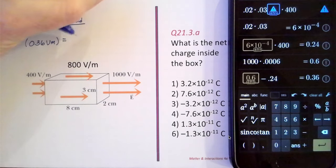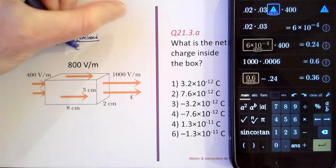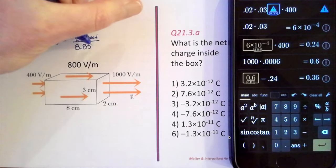Therefore, the unknown charge that is inside that box divided by epsilon zero, 8.85 times 10 to the minus 12.